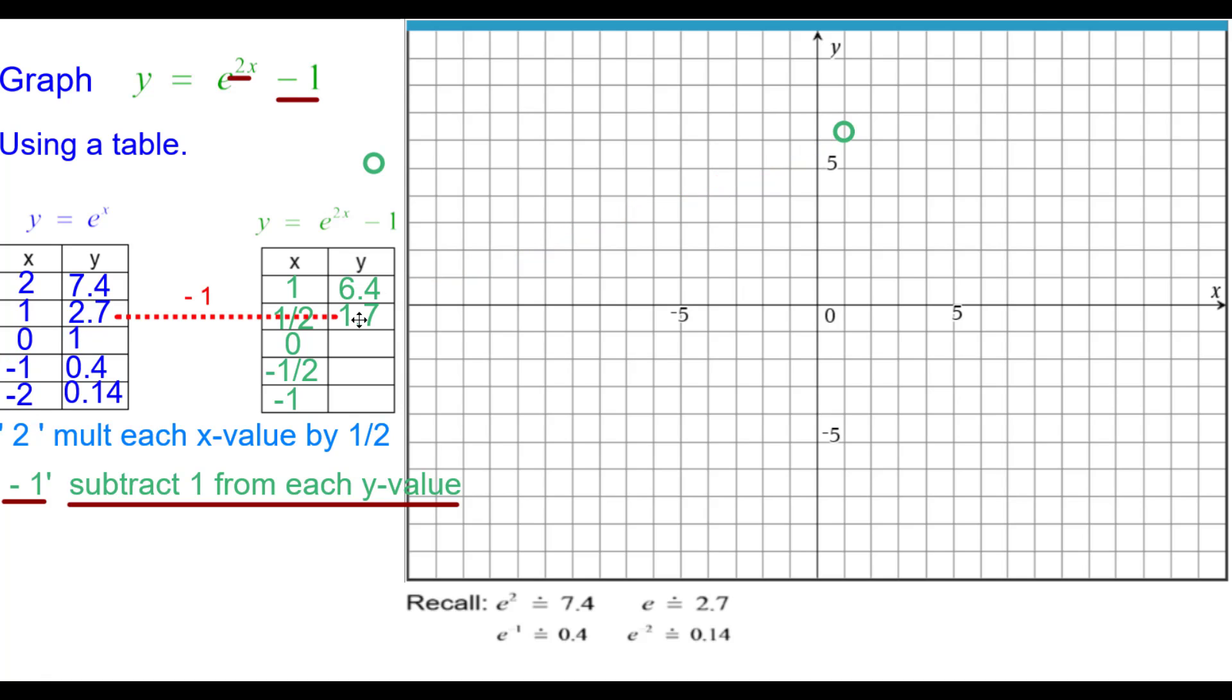2.7 minus 1 is 1.7. So over a half, up 1.7. 1 minus 1 is 0. So the origin is on this graph. 4 tenths minus 1 is negative 6 tenths. So negative 1 half comma negative 6 tenths. And 0.14 minus 1 is negative 0.86. So we'll plot negative 1 comma negative 0.86.